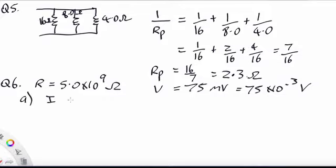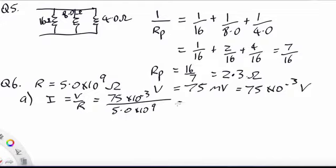So we use Ohm's law, V over R, 75 by 10 to the minus 3 over 5 by 10 to the 9. That gives us a current of 1.5 by 10 to the minus 11 amps.